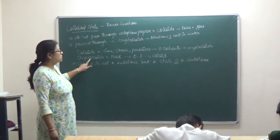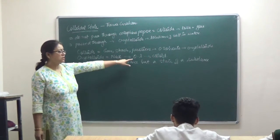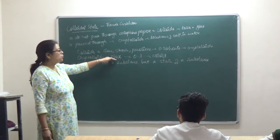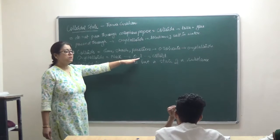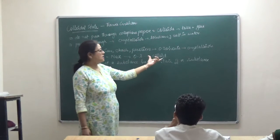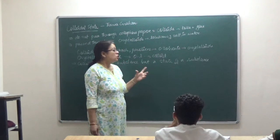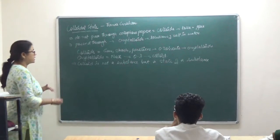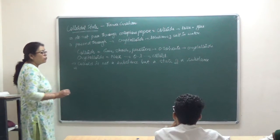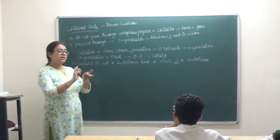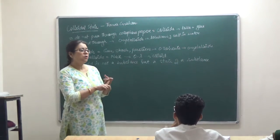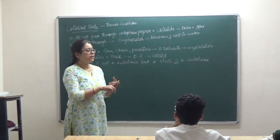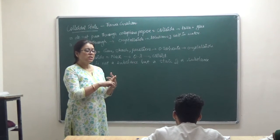In a similar manner, when crystalloids are dissolved in certain substances, they start behaving like colloids. So a colloid will change its state depending upon the solvent. It was therefore said that colloid is not a substance, but a state of a substance.